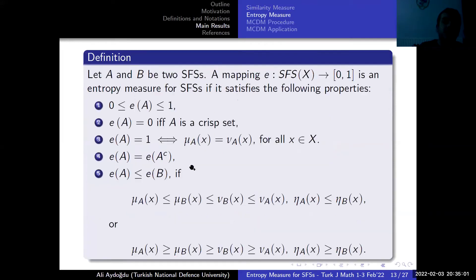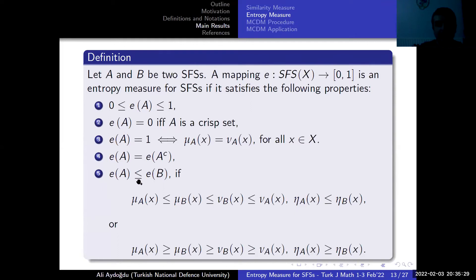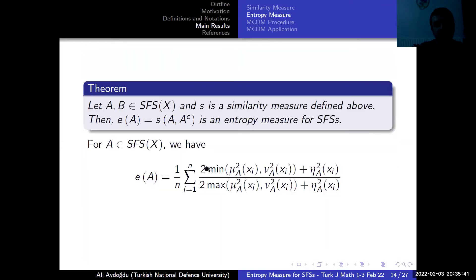We give the axiomatic definition of entropy measure for spherical fuzzy sets. The entropy takes the minimum value when A is a crisp set and takes the maximum value when the membership degree equals the non-membership degree. The entropy of a set equals the entropy of its complement. The entropy of A is less than or equal to the entropy of B if A is less fuzzy than B. We prove that the similarity of A and its complement is an entropy measure, and by reorganizing the similarity measure formula we obtain the entropy measure formula for spherical fuzzy sets.